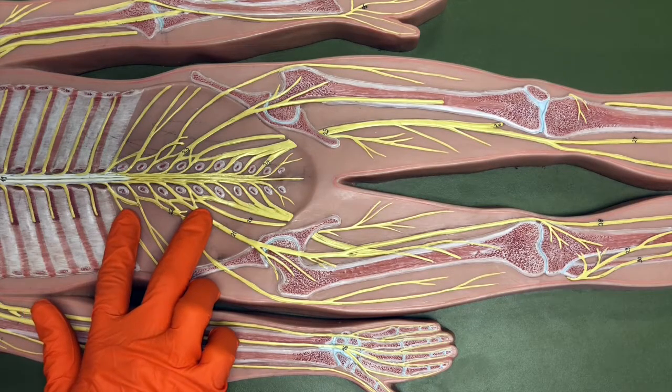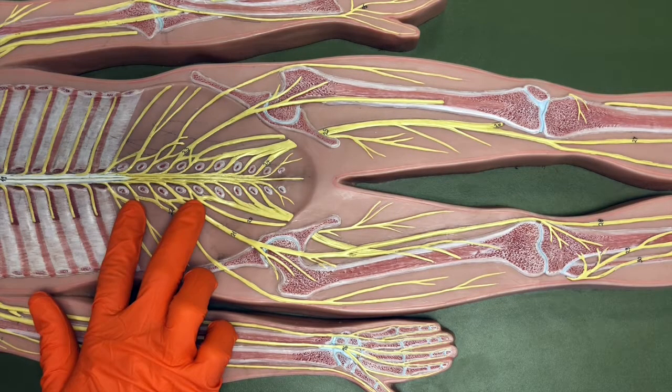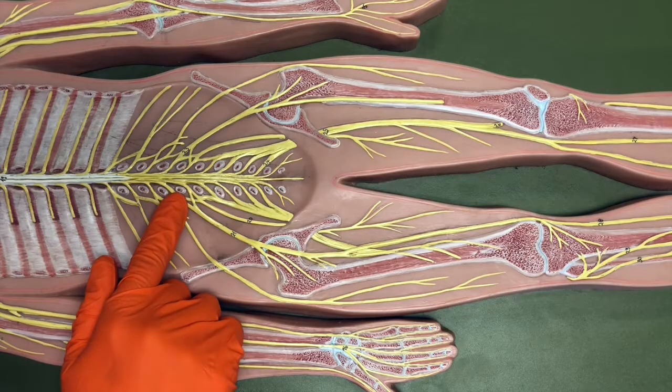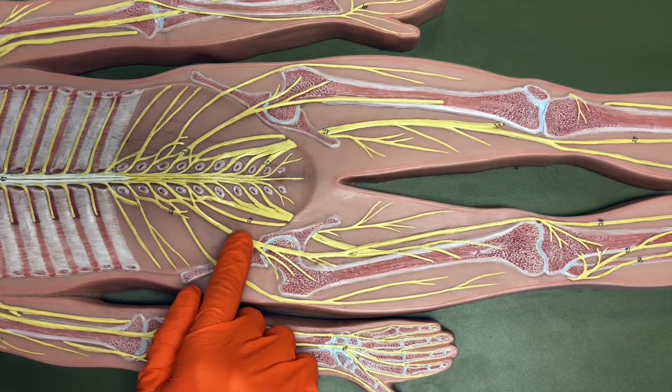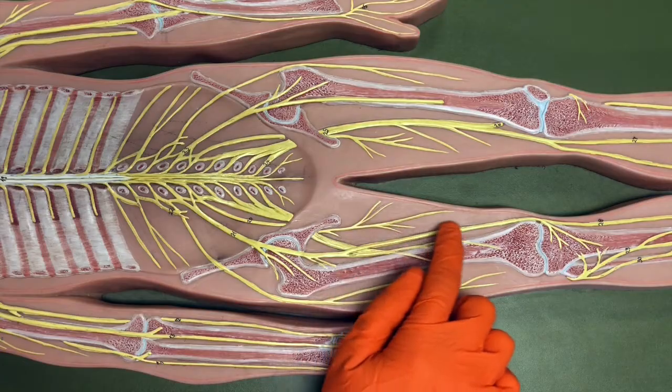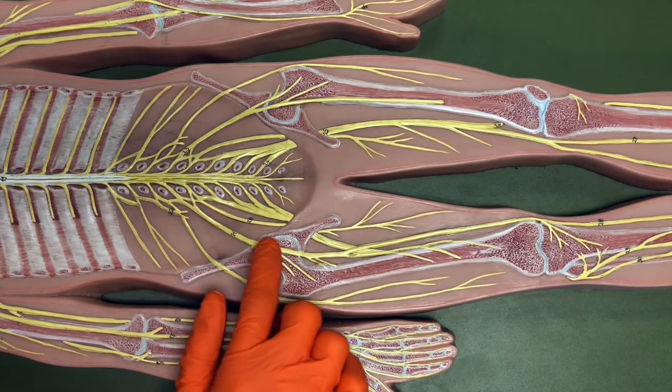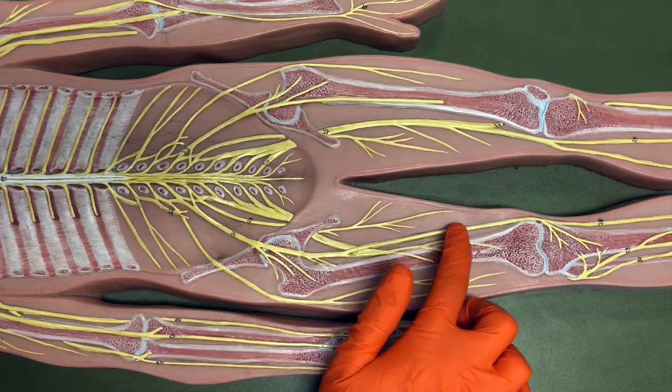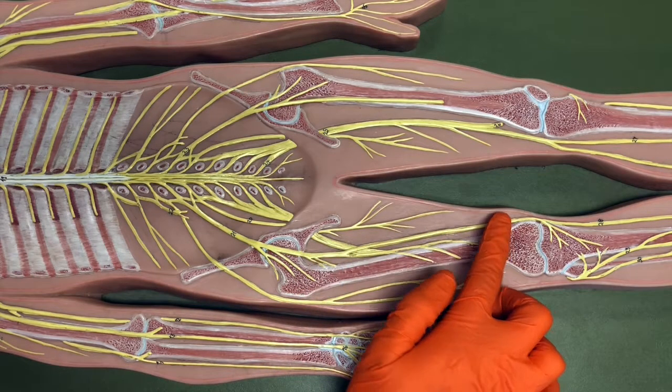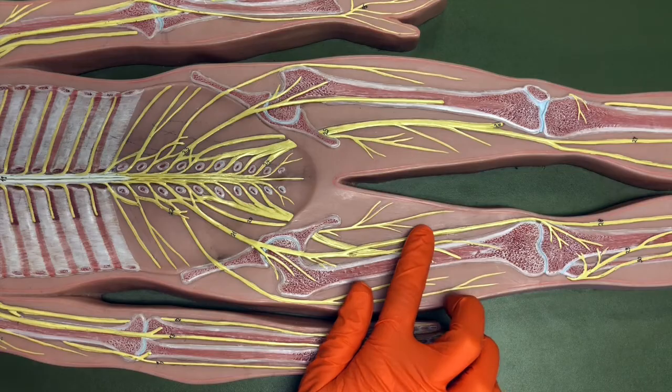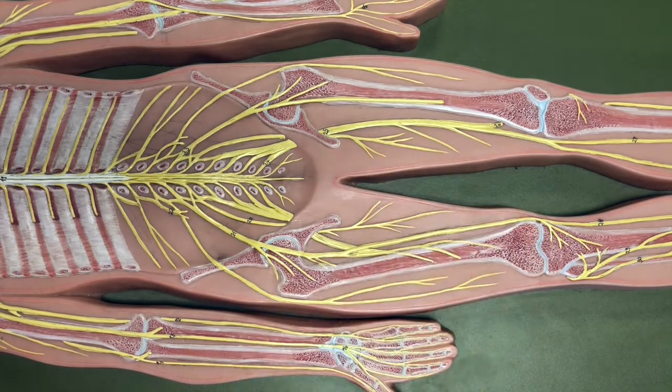Here again is that right lumbar plexus. And the main nerve that is going to come from that plexus is the femoral nerve. So since we're on the right side of the body, right lumbar plexus, the main nerve that comes off of that would be the right femoral nerve. And this nerve is going to innervate the anterior thigh muscles.